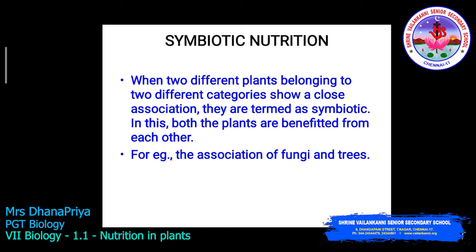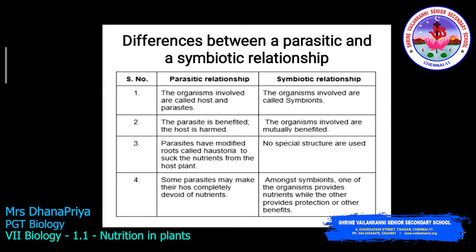The difference between parasitic and symbiotic: in a parasitic relationship, organisms involved are called host and parasite; in a symbiotic relationship, they are called symbionts. In a parasitic relationship, the parasite is benefited while the host is harmed. In symbiotic relationships, organisms are mutually benefited. Parasites have modified roots called haustoria to suck nutrients from the host plant, whereas in symbiotic relationships no special structures are used. Among symbionts, one organism provides nutrients while the other provides protection or other benefits.